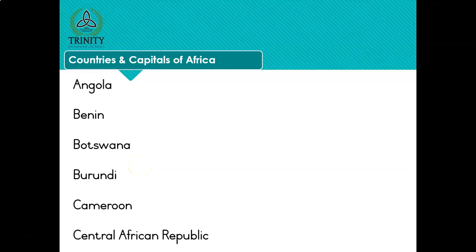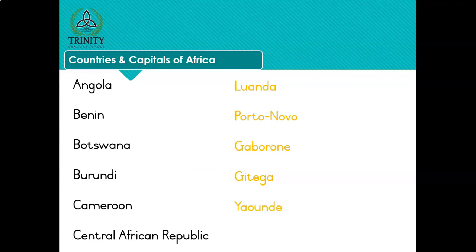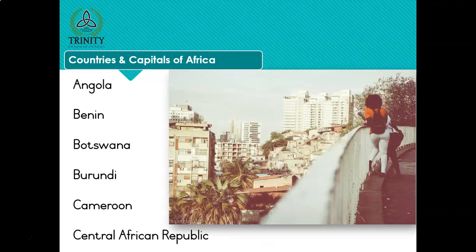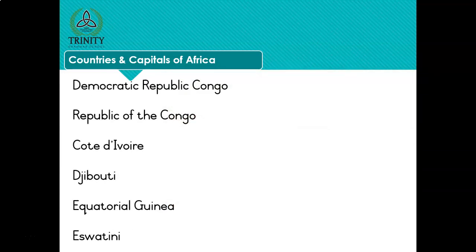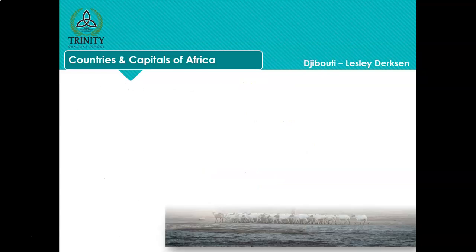Say the names and read with me. I want to see if you can get the name of the capital before I click. Angola - Luanda. Benin - Porto-Novo. Botswana - Gaborone. Burundi - Gitega. Cameroon - Yaoundé. Central African Republic - Bangui. Democratic Republic of Congo - Kinshasa. Republic of Congo - Brazzaville. Cote d'Ivoire - Yamoussoukro. Djibouti - Djibouti. Equatorial Guinea - Malabo. Eswatini or Swaziland - Mbabane.